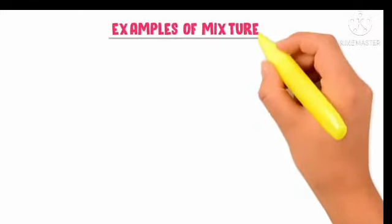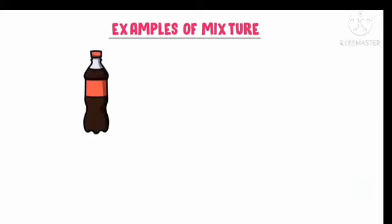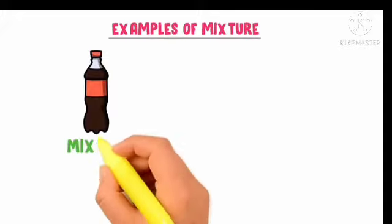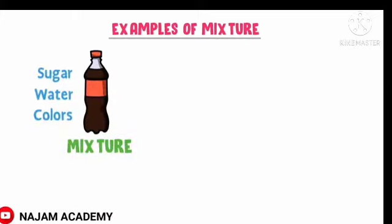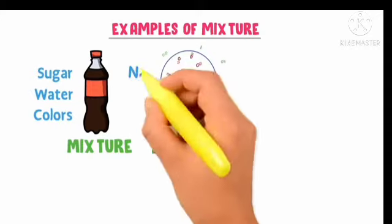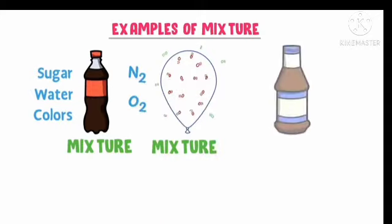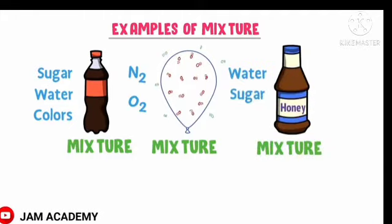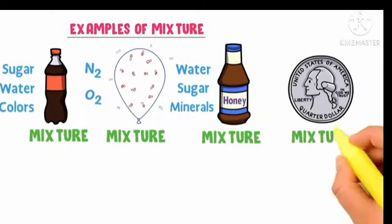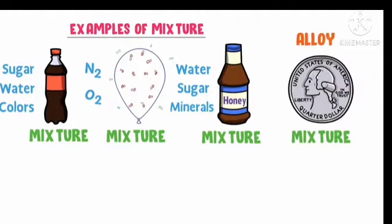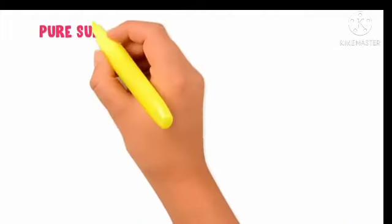Now take one example of a mixture. Here we take a coke bottle — that solution has a mixture of sugar, water, and colors; different ones mixed together, that is called a mixture. Another mixture example is a balloon, which contains nitrogen gas and oxygen gas — these two gases form a mixture. Another one is honey — honey is a mixture of water, sugar, and minerals. Coke and honey are liquid state mixtures; balloon is a gas state mixture; and an alloy is a solid state mixture — that is copper and zinc combination.